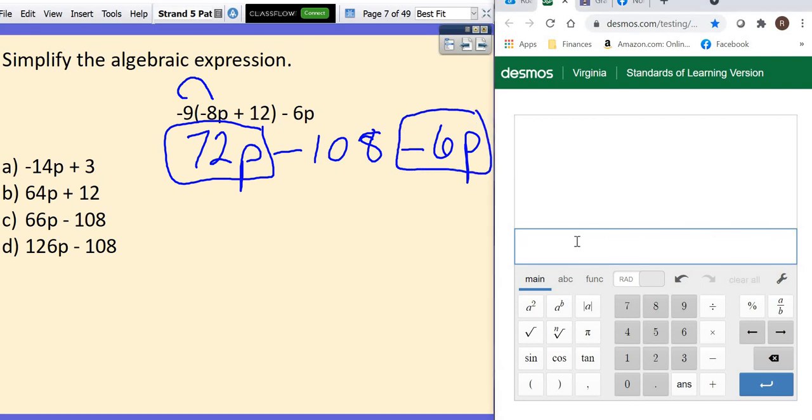So we're going to put together 72p and minus 6p. So I will come to my calculator and do 72 minus 6, which gives me 66p minus 108. So that's your answer.